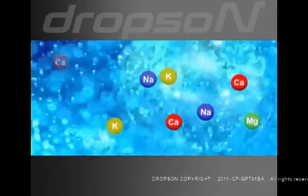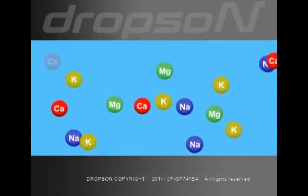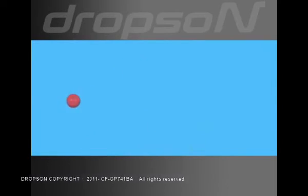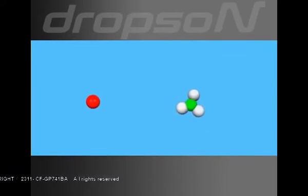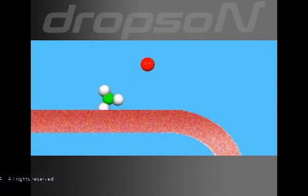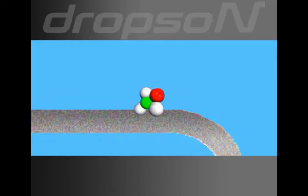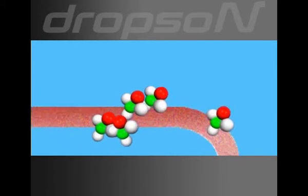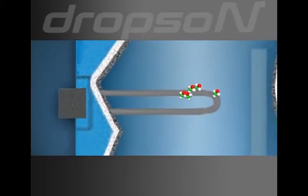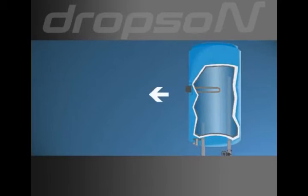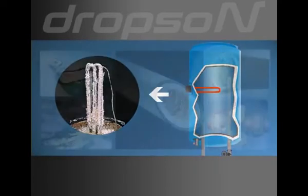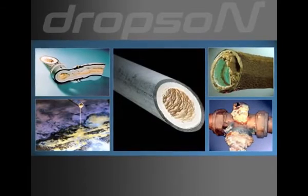We've all had problems at some time with limescale in our household. But do you know exactly how limescale is formed? Suspended in the water there are different kinds of minerals, such as magnesium, calcium, sodium, etc. The ions of calcium and carbon present in our pipes crystallize upon entering in contact with elements that generate energy — in our example, an electric heater. With higher presence of calcium in the water, a higher crystallization of calcium carbonate will occur. The accumulation of these crystals may seriously compromise the state of your pipes and household appliances.